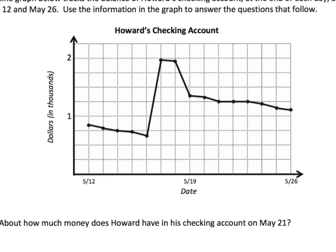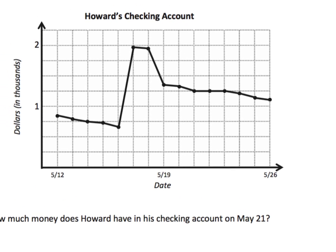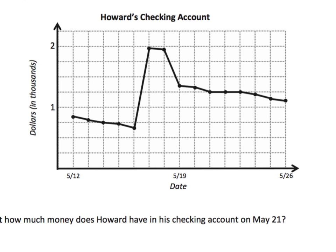So now once you understand what the graph is, you can answer any kinds of questions. Let's take a look at this one: about how much money does Howard have in his checkbook on May 21st? So first we have to figure out where is May 21st. If this is 19, that makes this 20, 21. So May 21st is right there, and I'm gonna put a little notch there.